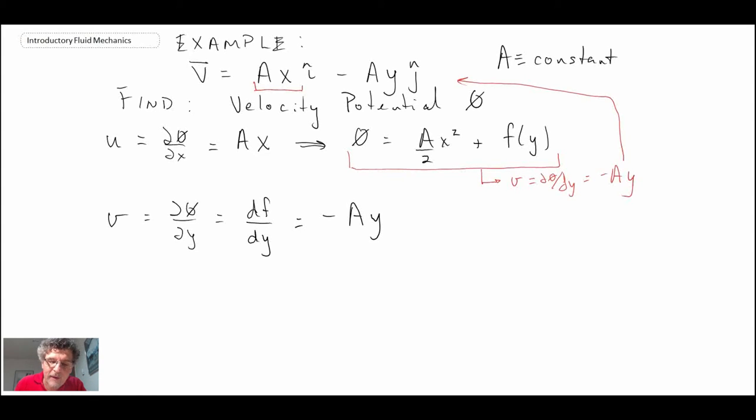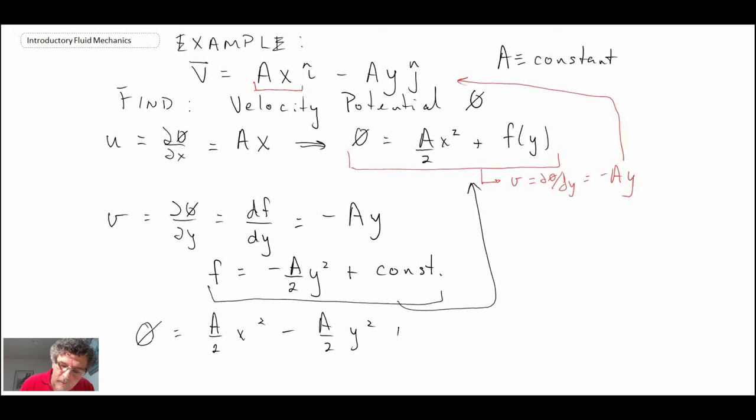And so with that, what I can do is I can integrate to solve for f. Once we integrate for f, we get this, plus, in this case, it's going to be some arbitrary constant that we don't know what it is. So we can take this here and plug it into that, and that gives us our velocity potential. So that would be the velocity potential function.